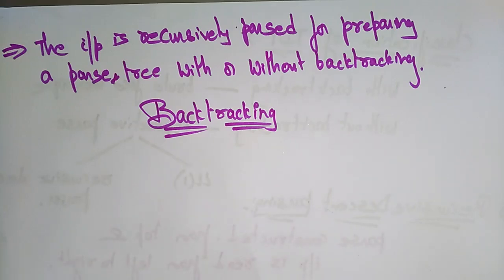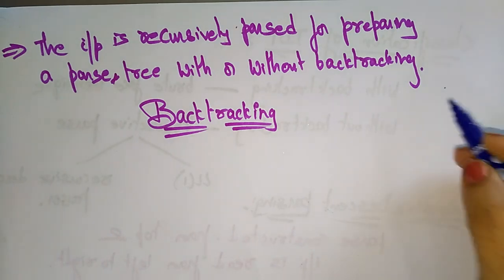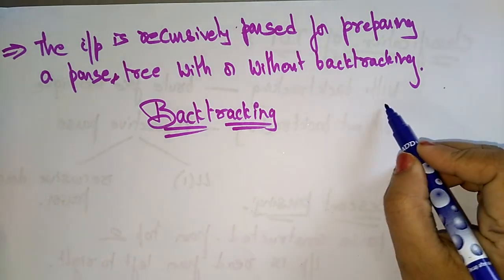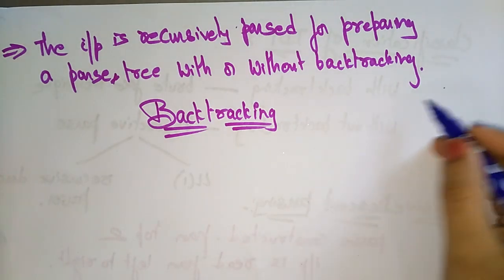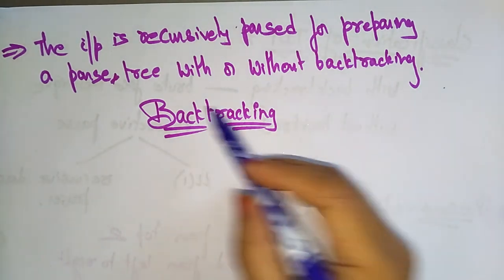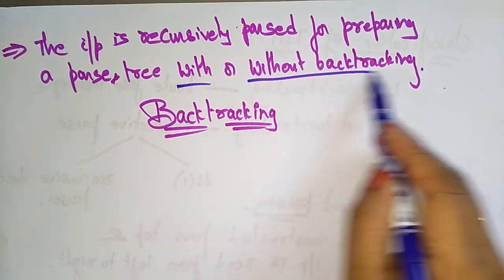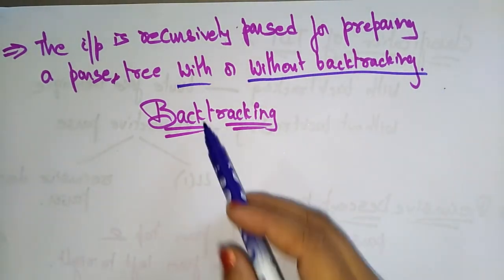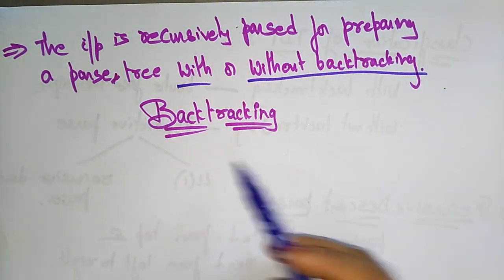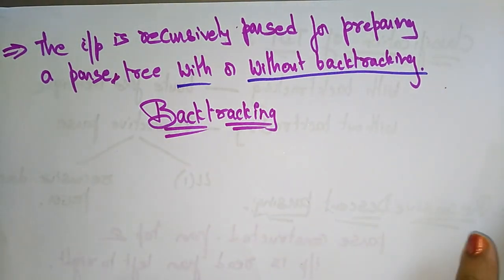Let's continue with the top-down parser. The recursive descent parser is of two types: one is with backtracking and one is without backtracking. Now let's see the concept of backtracking.